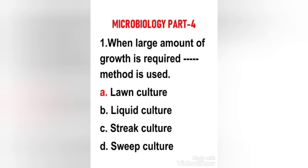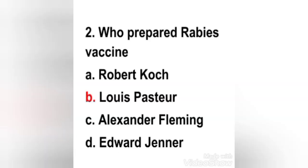Next question: who prepared the rabies vaccine? Options: Robert Koch, Louis Pasteur, Alexander Fleming, Edward Jenner. The right answer is option B — Louis Pasteur. French chemist Louis Pasteur, who is regarded as the father of microbiology, is renowned for his discoveries of the principles of vaccination, microbial fermentation, and pasteurization. He also invented the first ever vaccines for rabies and anthrax.